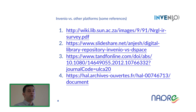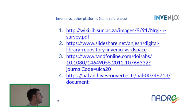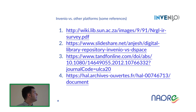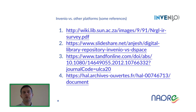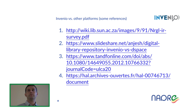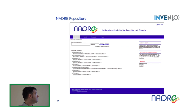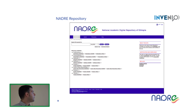In this slide you will find many references you can look at to know more about Invenio, and also to understand the differences between Invenio and DSpace — because DSpace is one of the frameworks most used in Africa to develop digital repositories. This is the home page of another digital repository based on Invenio.